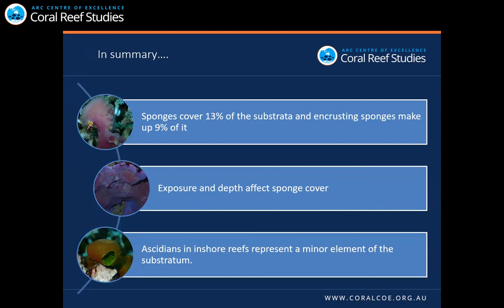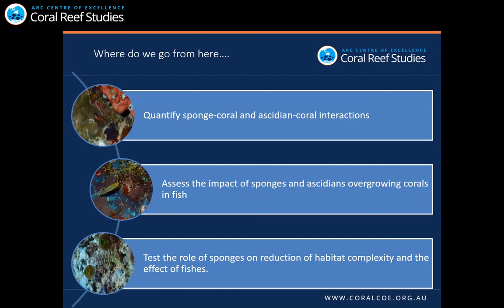In summary, sponges cover a substantial portion of the substratum in inshore reefs, with encrusting sponges being the most important group. Exposure and depth affect sponge cover, but the effect always depends on the specific reef. Ascidians represent a minor element in inshore reefs, but offshore at Otto's Reef they are one of the most dominant groups. The next steps are to quantify interactions between sponges and corals, and between ascidians and corals, assess their impact on reef-associated fishes, and test how sponges modify habitat complexity to affect fish communities.